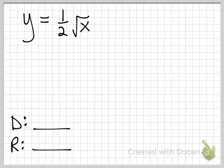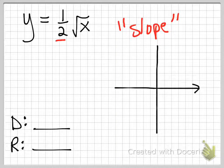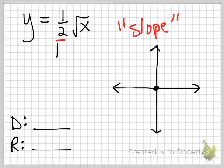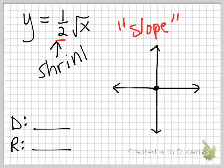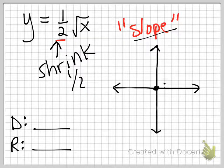If we take that parent function and we put a one-half in front, that changes what I call the slope — and I put that in parentheses because it's not really called the slope, it's just the first little bit out of the box when you graph it. So it's still going to go through (0, 0), but now this is a shrink by one-half. If it's less than one, it's a shrink. So instead of going through (1, 1), when we come over to 1, we're only going to go up to a half. So it's going to be shorter — that's why it's a shrink.